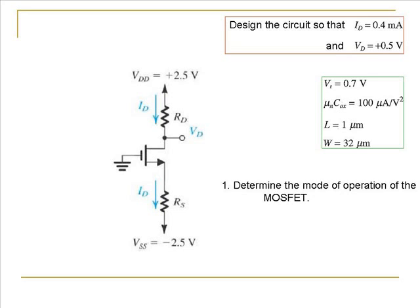The first step to solving such problems is to determine the mode of operation of the MOSFET. Is the MOSFET operating in the triode region, in the saturation region, or in the cutoff region? To determine whether the MOSFET is working in the triode region or in the saturation region, we compare VGD — the voltage between the gate and the drain — and the threshold voltage.